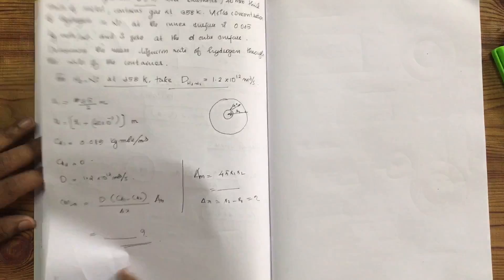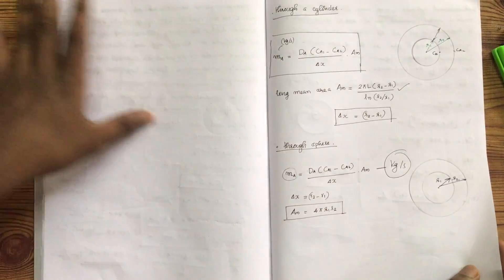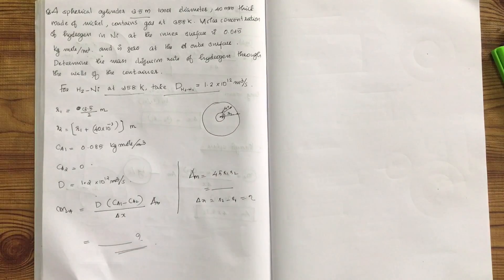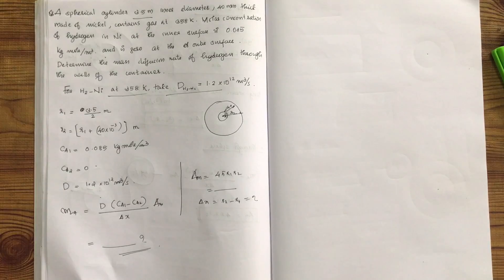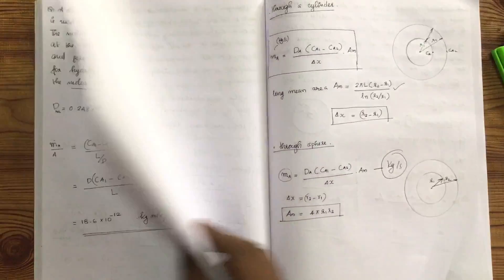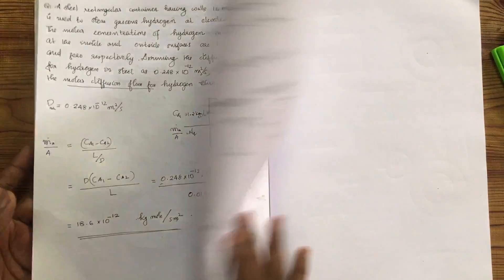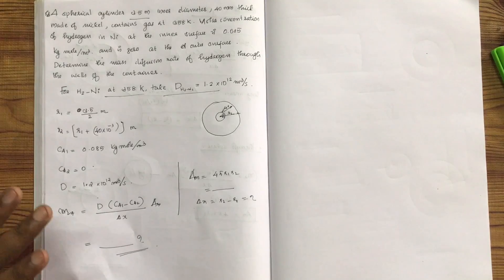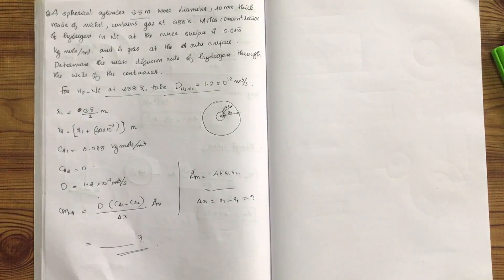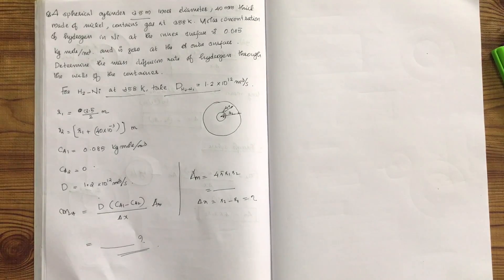For sphere or cylinder cases, the same approach applies using the appropriate mean area expression. This is the derivation for mass diffusion through different geometries. The video covers mass diffusion topics including the general mass diffusion equation and worked numerical problems. Further videos will cover additional mass diffusion content and data book usage.